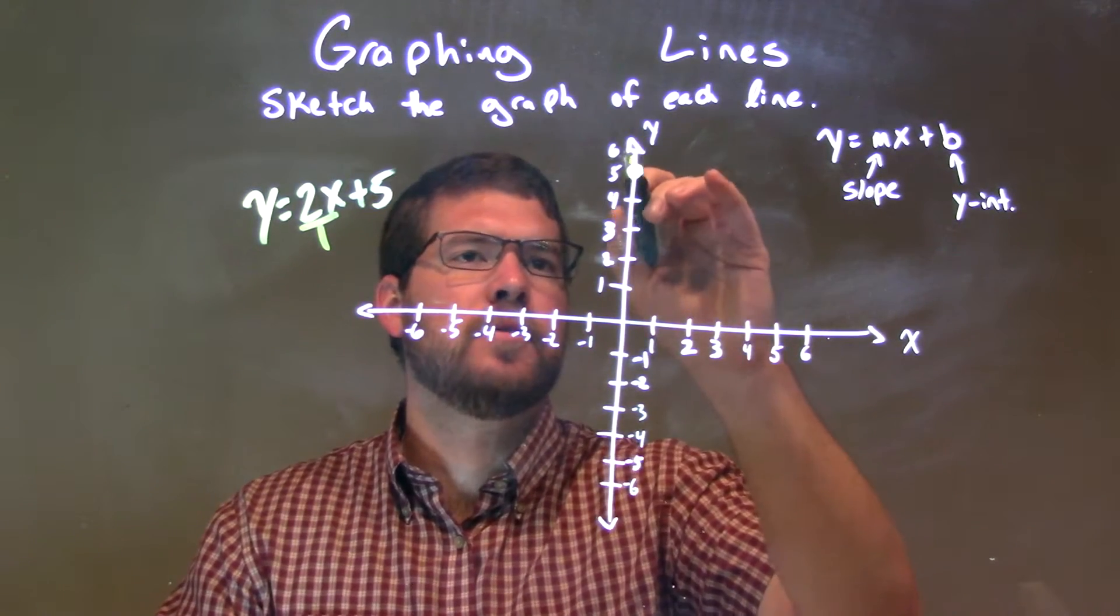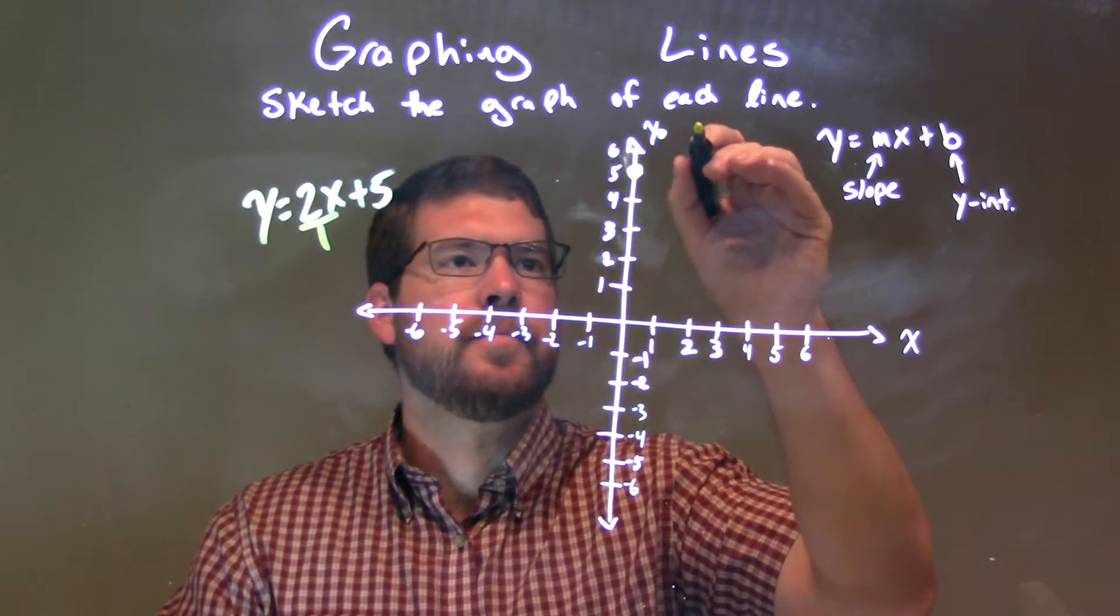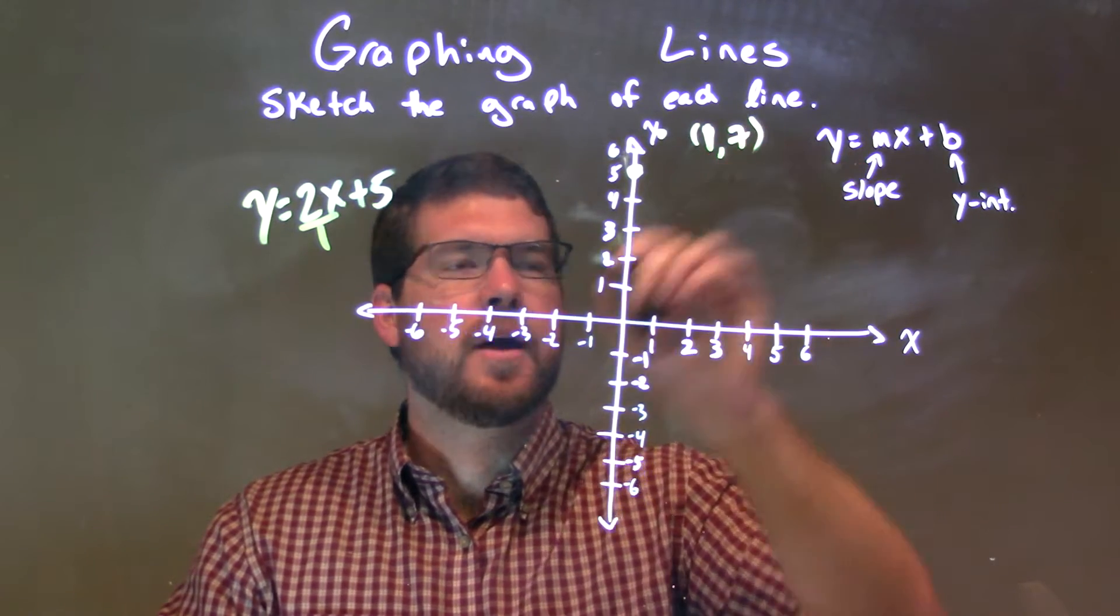And we also know, so actually, up 2 units, 1, 2, a little past it, over 1 we've got a point right there, and that's 7 comma or 1 comma 7, excuse me, I always do that. 1 comma 7.